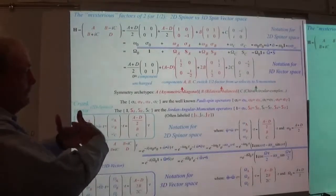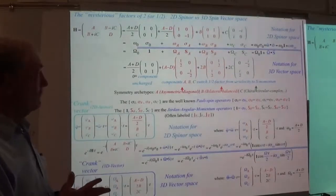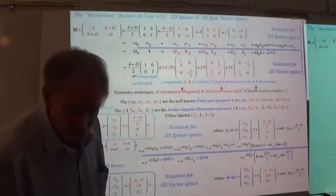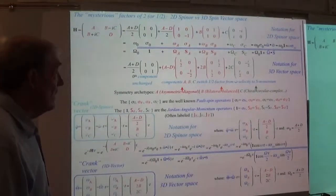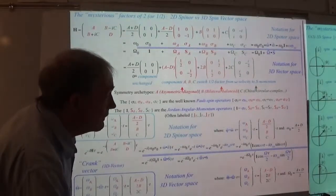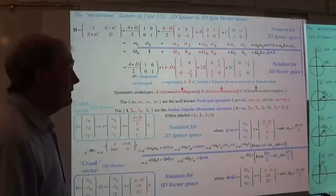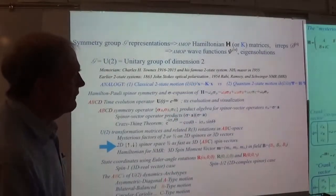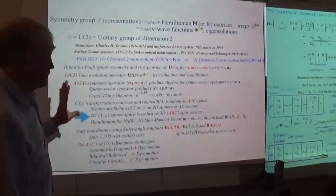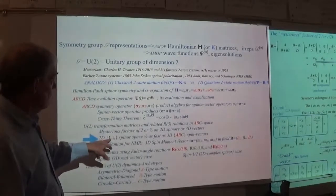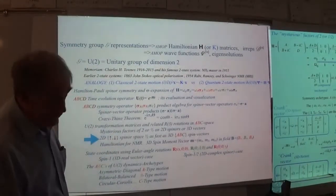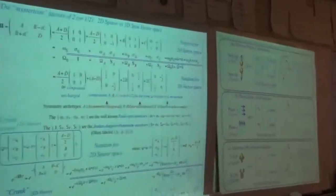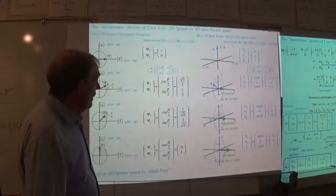This is where the rubber meets the road. This is where we get to realize that we've got to deal with half a quanta, and the operators are associated with anti-commutation. There's all kinds of still-mysterious stuff behind all of this, but that's it. Let's get all of this stuff up to speed, and then we're going to actually use it to look at something that's really quite obvious.